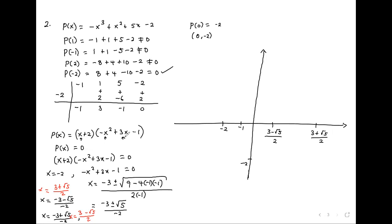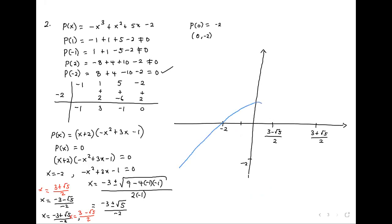If you look at P of negative 1, we get negative 7 plus 2, which is negative 5, lower than negative 2. So it just makes sense knowing which way I'm dealing with the graph.